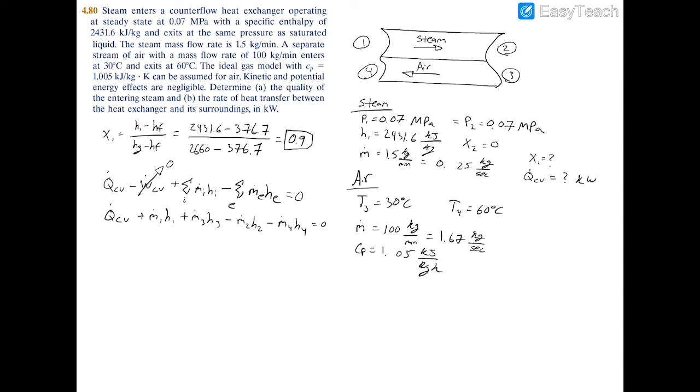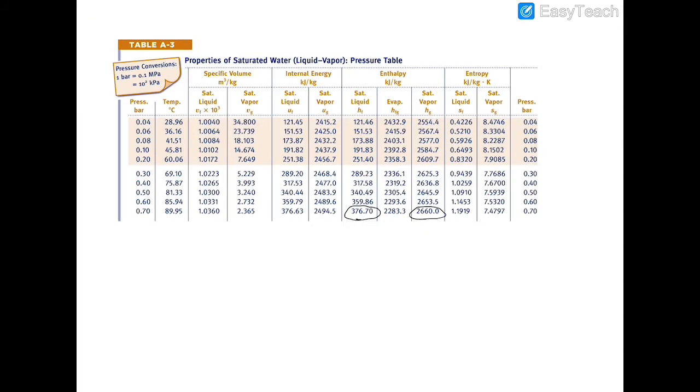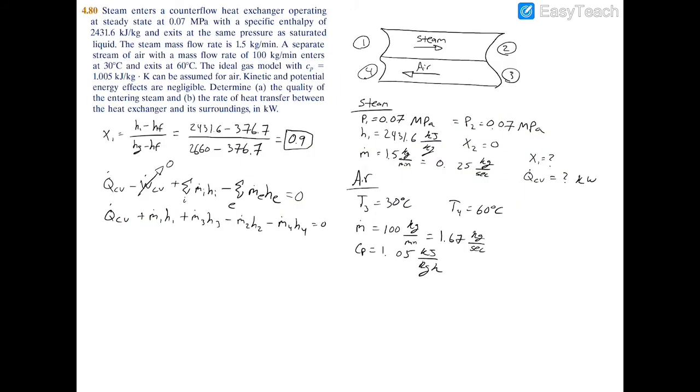Now we're told that we have the enthalpy at one, but we don't have the enthalpy at two, three, and four, but we can calculate that given the information that we know. So we know that the enthalpy at two, for example, will be 0.7 bar and a quality of zero. So if we go back to our table here, we know that the enthalpy at two will just be the saturated vapor, so it'll be 376.7, and that's going to be h2.